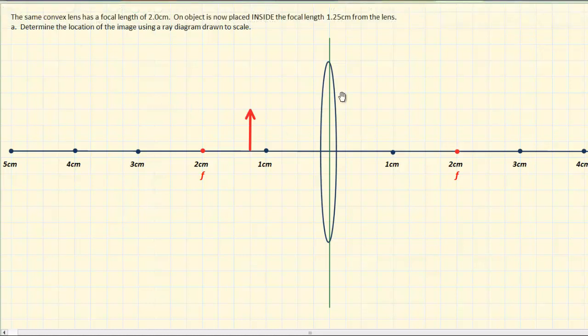For this example, we've got the same lens we used previously, the same convex lens. Its focal length is 2 centimeters, so because once again it's double-sided, we've got a focal point on either side of the lens at the 2 centimeter mark.